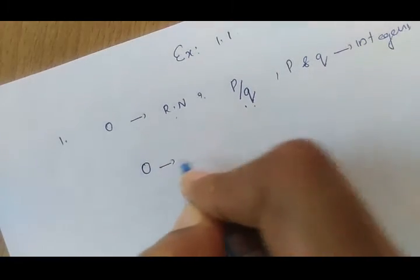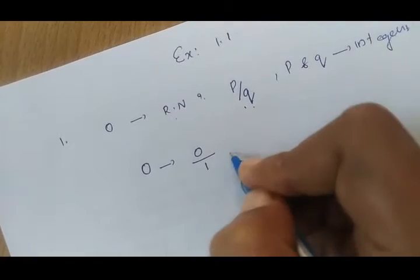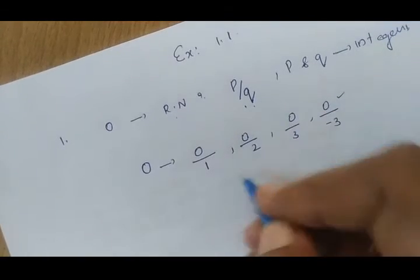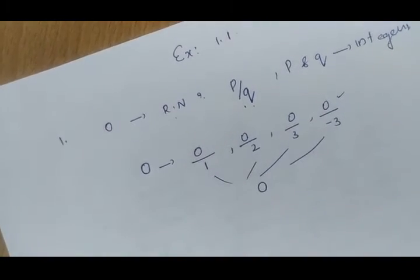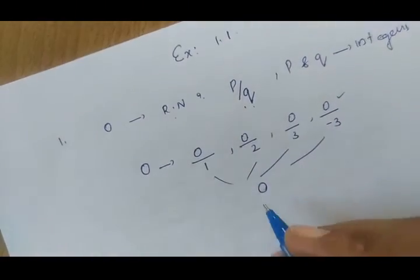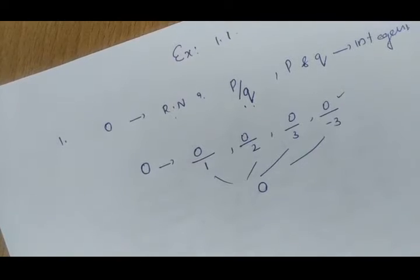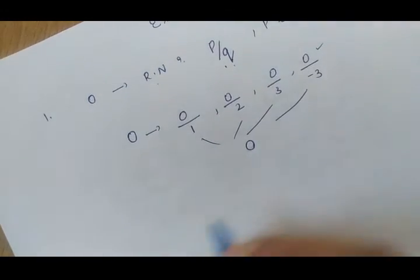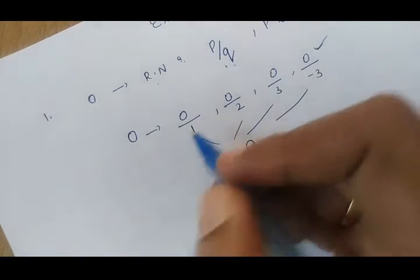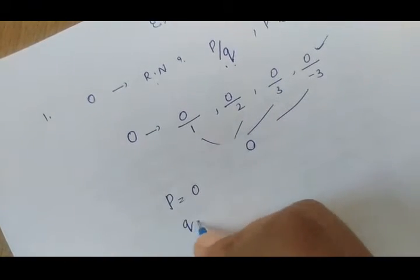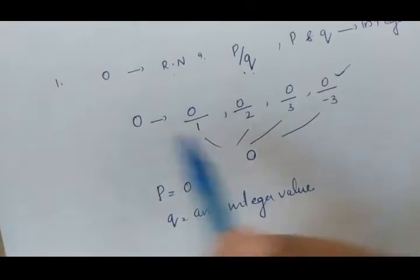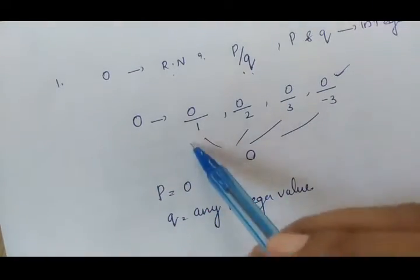We can say that 0 is a rational number because we can represent 0 as a ratio or fraction: 0 by 1, 0 by 2, 0 by 3, 0 by minus 3. Any values will give result as 0. All these rational numbers generate result as 0. So we can represent 0 as a rational number. We can write it in the form of P by Q where P is equal to 0 and Q is equal to any integer value.